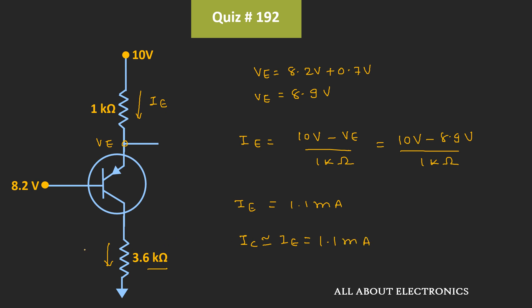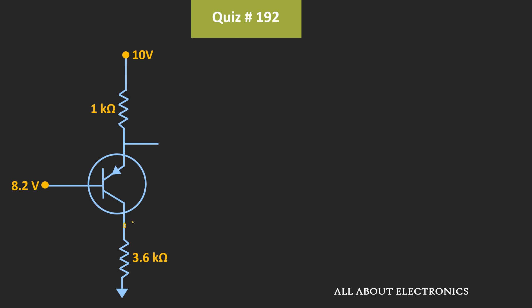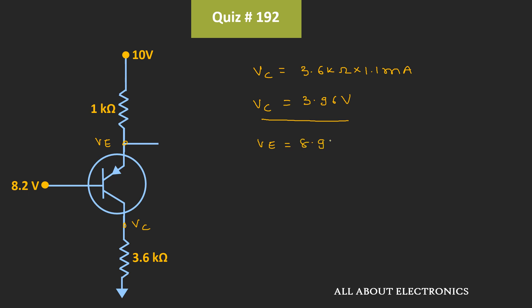Once we know the collector current, we can find the voltage across the 3.6 kΩ resistor, which is the collector voltage Vc. So Vc equals 3.6 kΩ × 1.1 mA = 3.96 V. We already know the emitter voltage VE = 8.9 V. Therefore, VCE = Vc − VE = 3.96 V − 8.9 V = −4.94 V.